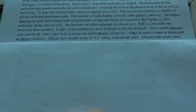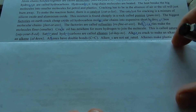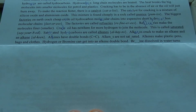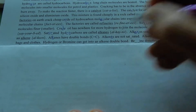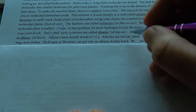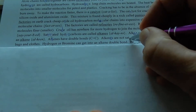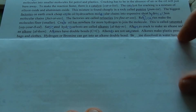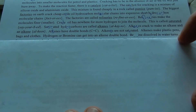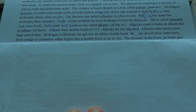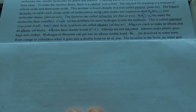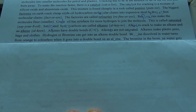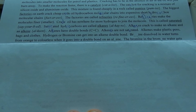Alkenes have double bonds — C double bond C. Alkenes are not saturated. Alkenes make plastic pens, bags and clothes. Hydrogen or bromine can get into an alkene double bond.